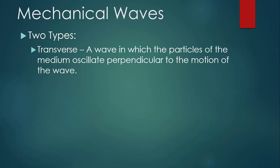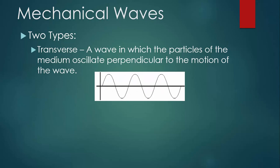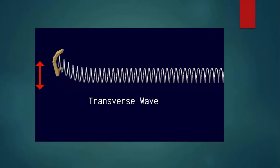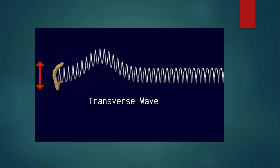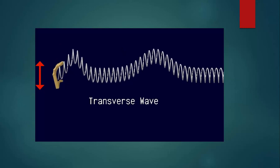The first is a transverse wave. This is a wave in which the particles of the medium oscillate perpendicular to the motion of the wave. Here is a simple diagram that you could copy into your notes that shows us basically what a transverse wave looks like. In a transverse wave, the disturbance that makes up the wave is perpendicular to the direction in which the wave travels.